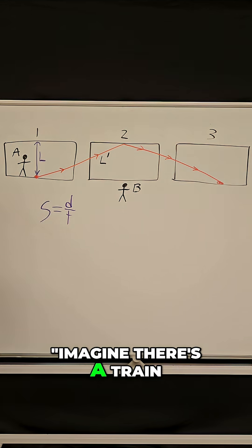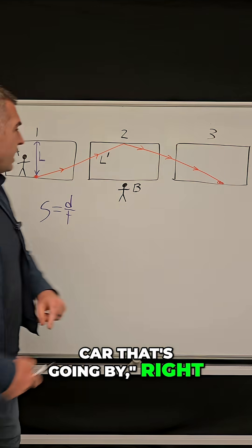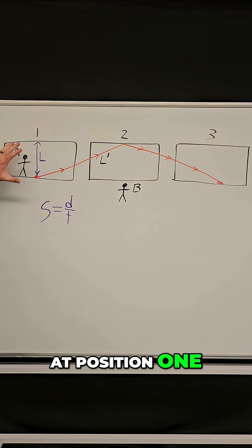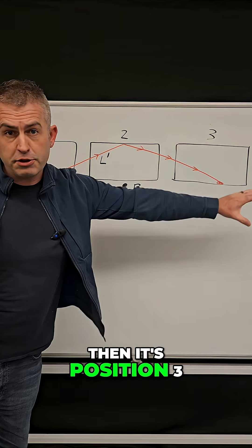So Einstein said, imagine there's a train car that's going by, right? And the train is at position one, then it's position two, then it's position three.